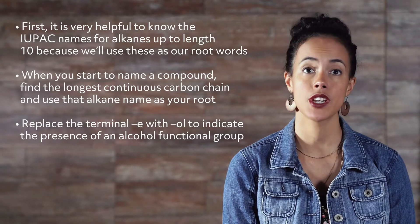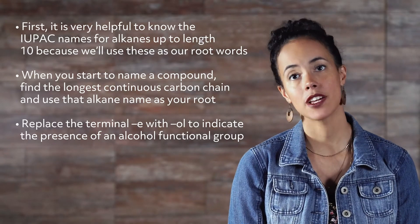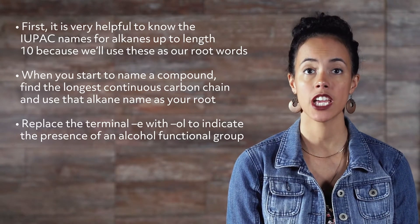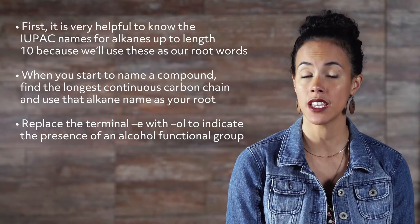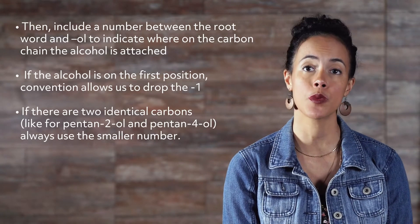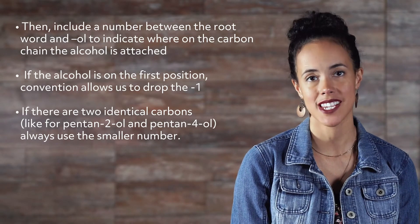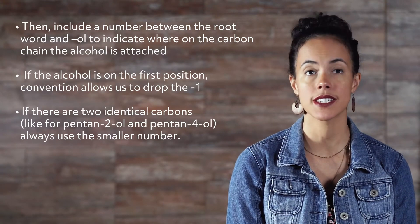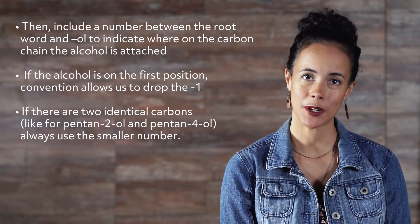Let's review what we've learned about naming simple organic alcohols. First, it is very helpful to know the IUPAC names for alkanes up to length 10, because we'll use these as our root words. Find the longest continuous carbon chain and use that alkane name as your root. Replace the terminal E with -ol to indicate the presence of an alcohol functional group. Then include a number to indicate where on the carbon chain the alcohol is attached. If the alcohol is on the first position, convention allows us to drop the 1. If there are two equivalent positions, like pentan-2-ol and pentan-4-ol, always use the smaller number. Thanks for watching and happy studying.